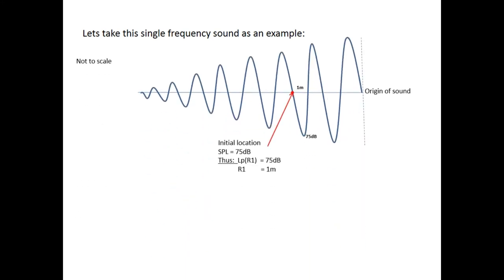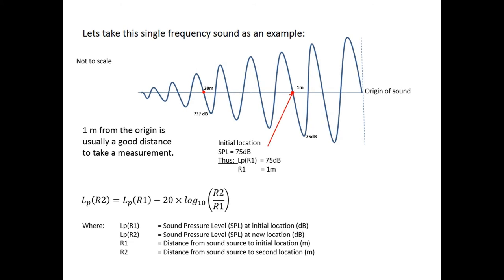So, let's take a single frequency like this one on screen for an example. You can see that the origin of the sound on the right hand side starts off very well. And as the sound progresses with time, it starts to decay, until finally there is nothing left. The initial location where it's measured is on the screen there, you can see at 1 meter. And for this example, I use 75 dB, or decibel. That is the unit that we use to measure sound pressure levels. After that 1 meter, I can now take another measuring point, which is, for instance, 20 meters. And we want to find out what is the sound pressure level at that point, at 20 meters.